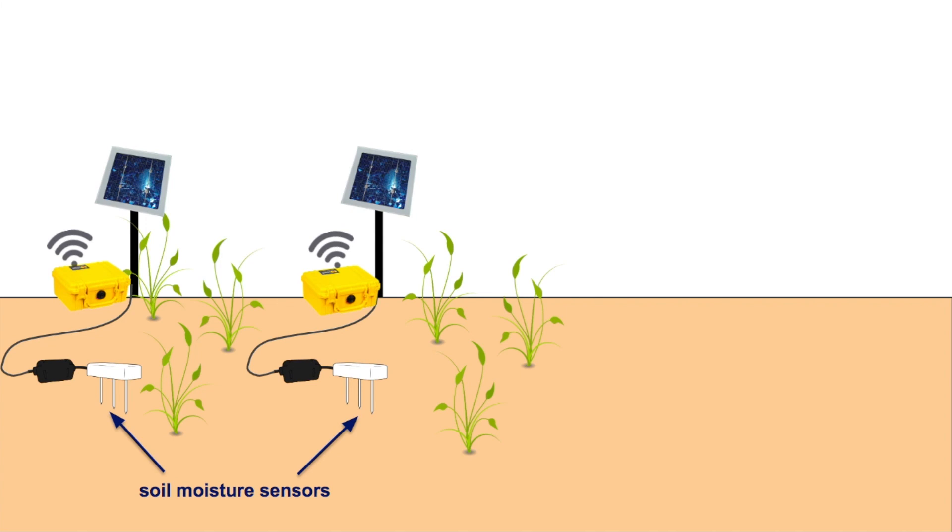Each node makes measurements which are then communicated to a centralized location like a farmhouse.